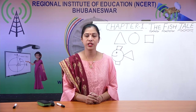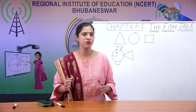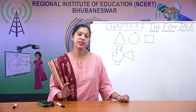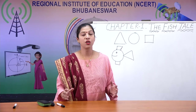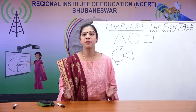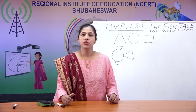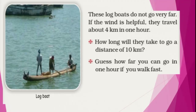Wind plays an important role too. If the wind is coming from the front, they cannot go ahead. If the wind is pushing from the back, they can go ahead without much effort. Generally, log boats travel about four kilometers in one hour. Even if we walk fast, we can cover five or six kilometers in one hour — log boats are that slow.